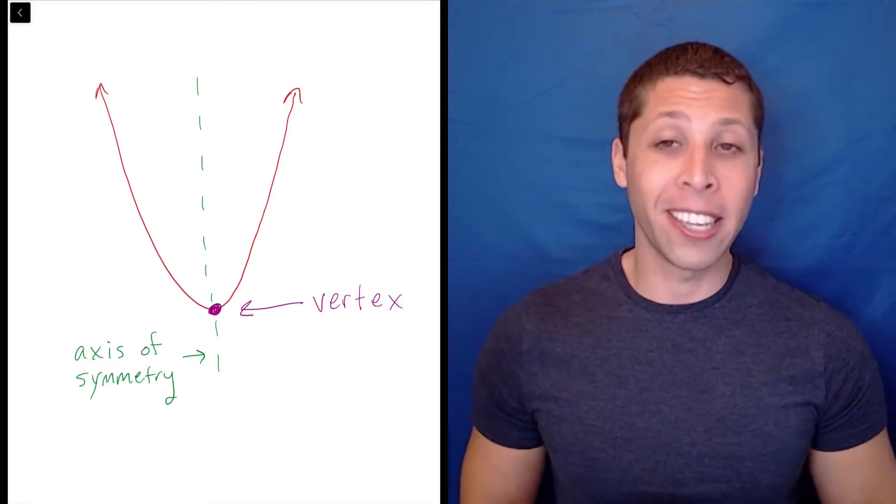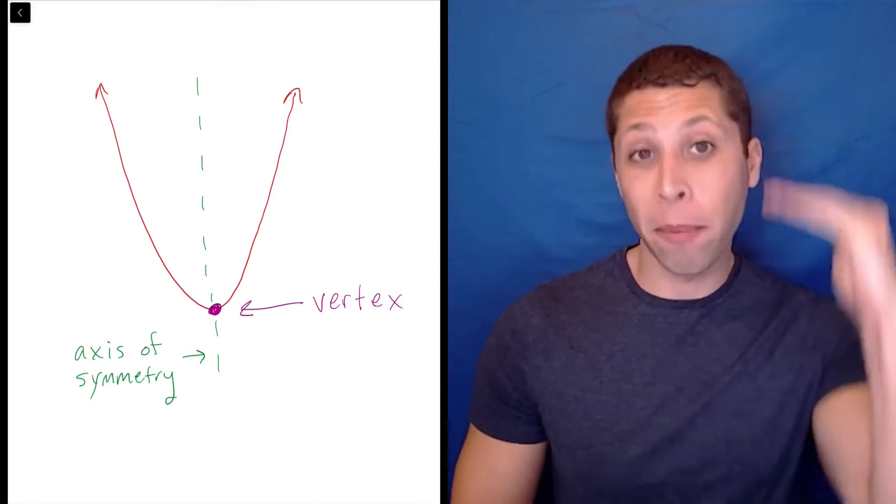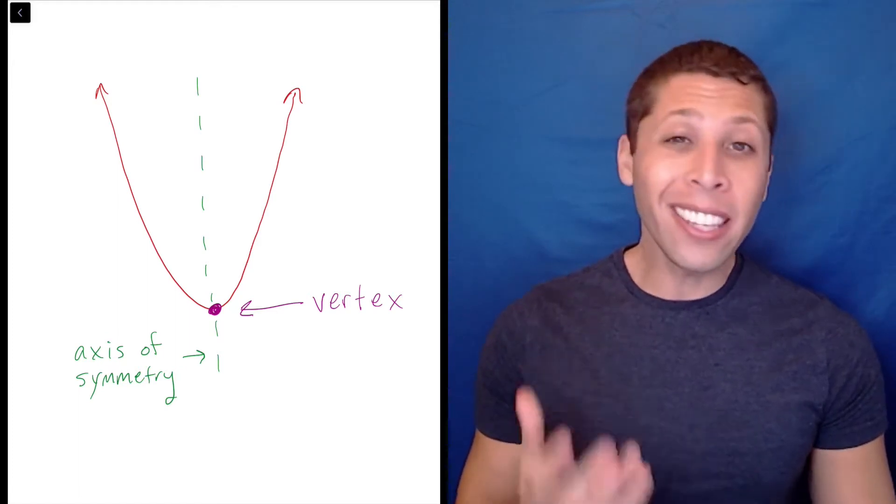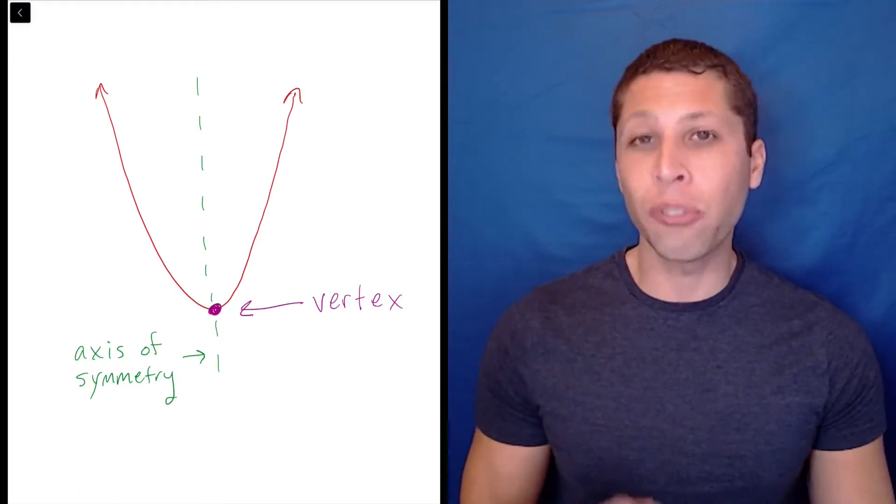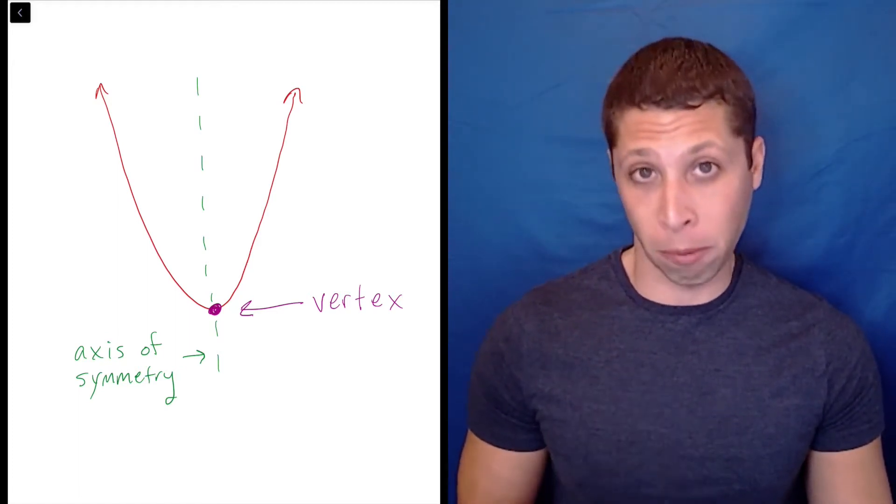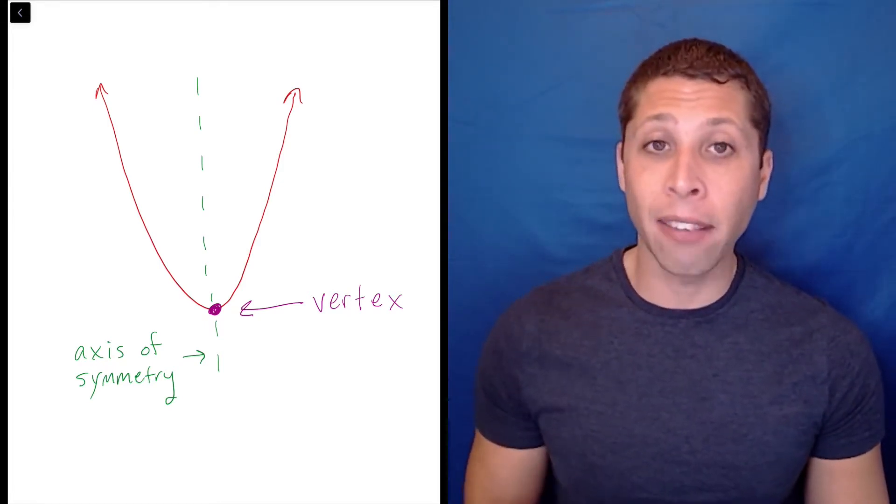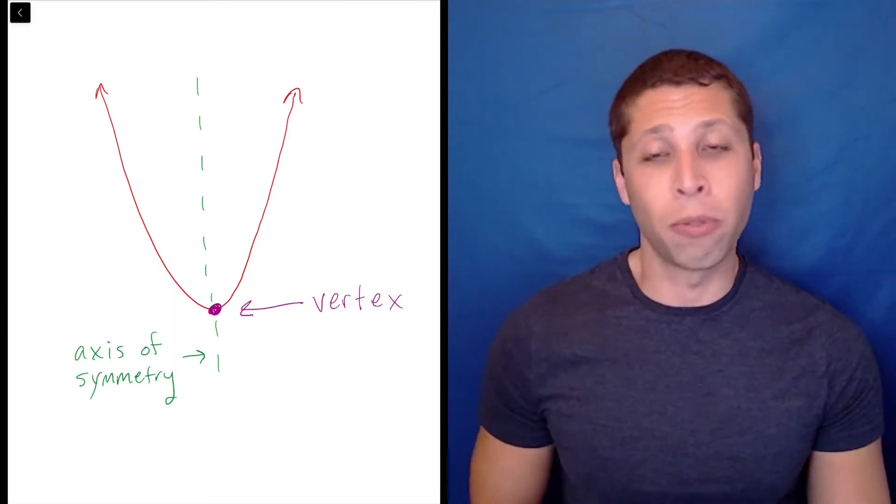The vertex of a parabola is the turning point, either the maximum or the minimum. There are a few ways to find the vertex, but the easiest is probably to use the axis of symmetry formula. The axis of symmetry is the vertical line that divides a parabola in half and it always passes through the vertex.